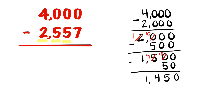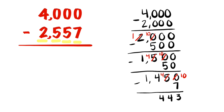Last, we subtract our ones place, which is 7. So let's subtract 7. We can't do 0 take away 7, so we have to go next door and borrow one of our tens. So now we only have four tens left, and we're going to give those tens over to the ones. So we have 10, and 10 take away 7 is 3. 4 take away nothing is 4.